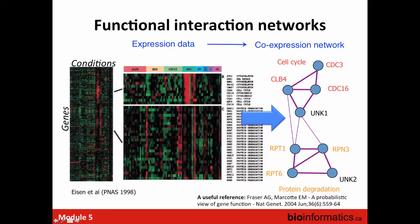Not every gene has an assigned function. But if you find an unknown gene that's highly linked to genes with cell cycle function — co-expressed with those cell cycle genes — that provides evidence that the unknown gene shares that function. This is what we call guilt by association: we don't know what the gene does, but it's associated with many genes that have a particular function, so that's evidence it shares that function. It might not work in a court of law, but it works here.